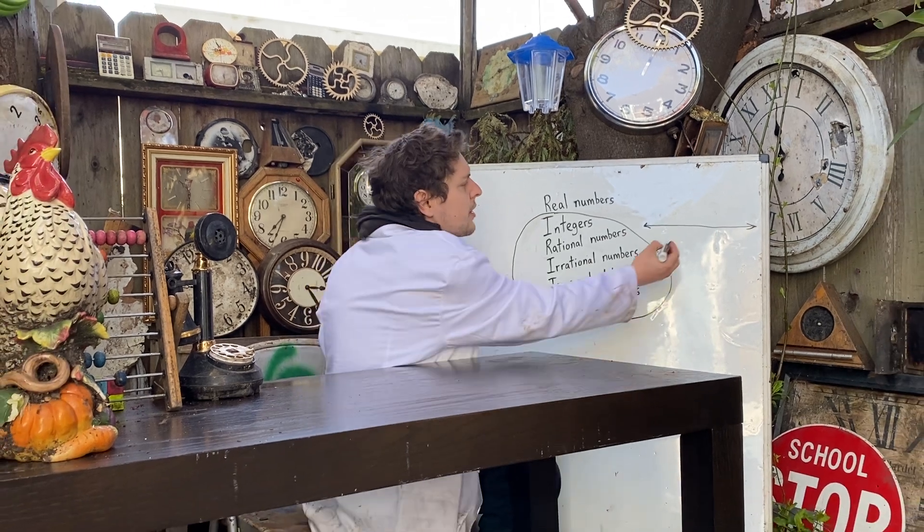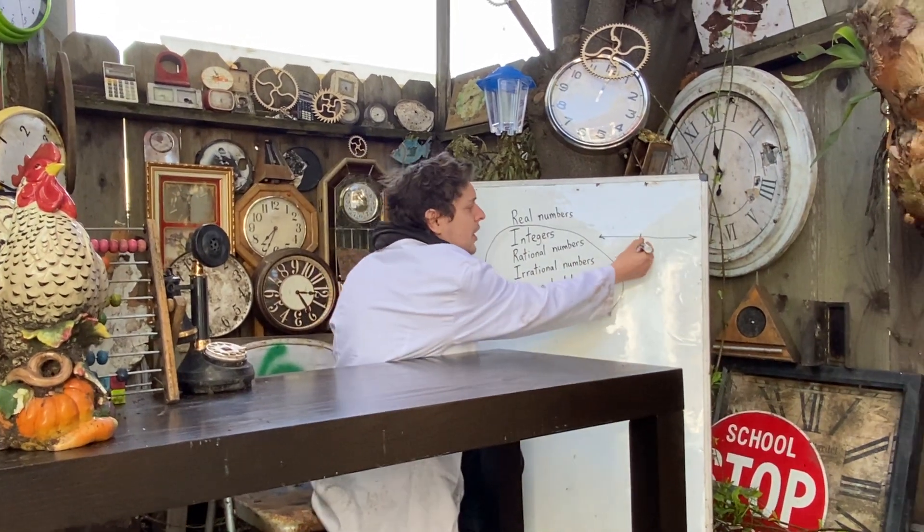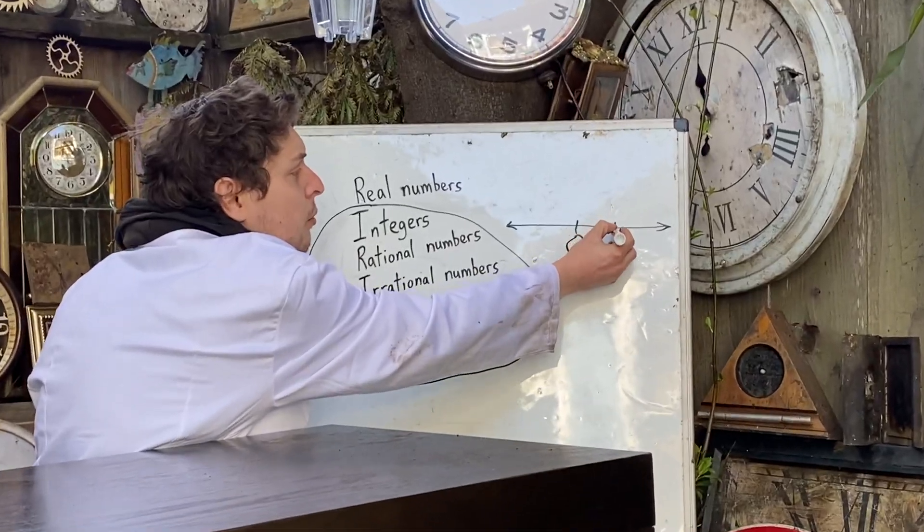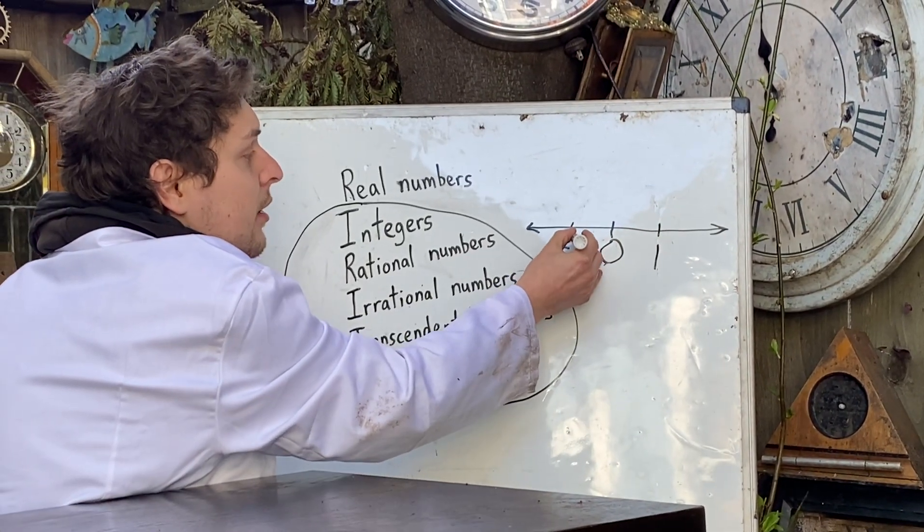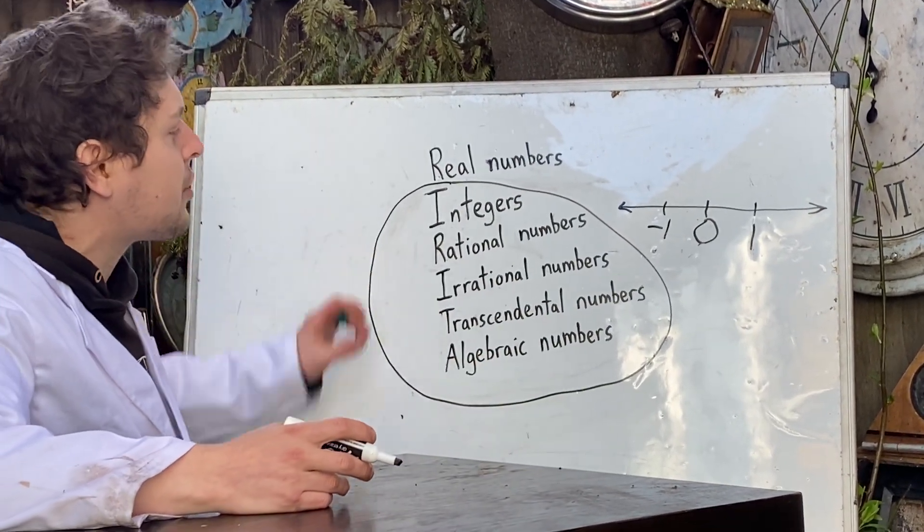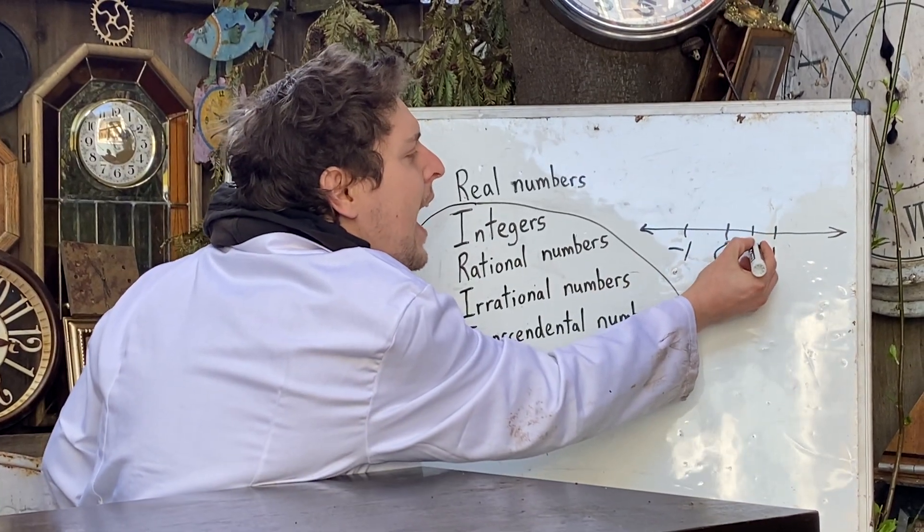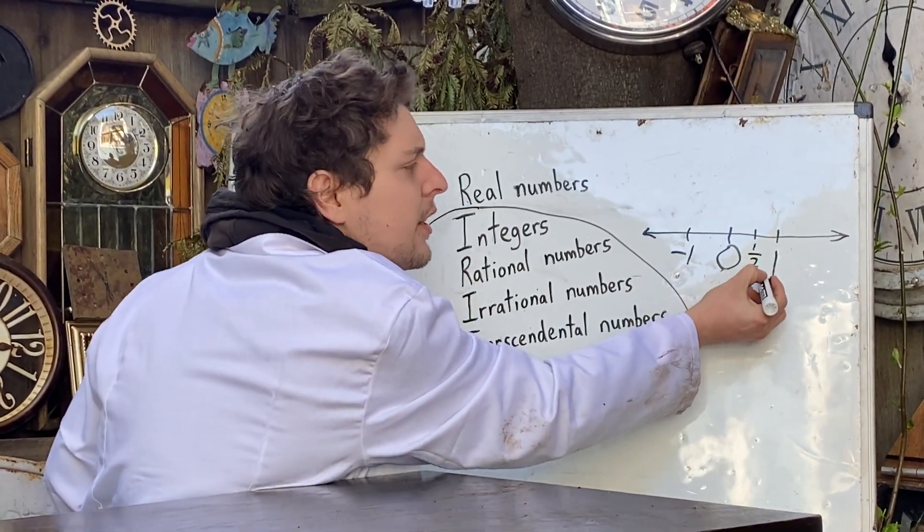And the integers are essentially numbers without any fractional components such as 0, 1, negative 1, 10, negative 20. Those are all integers.